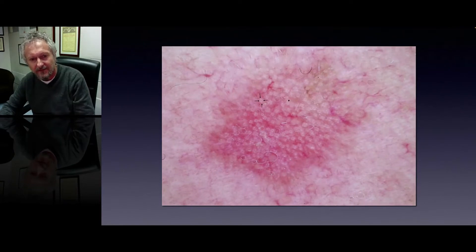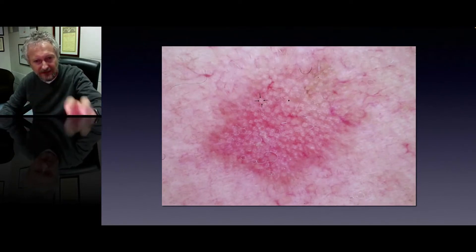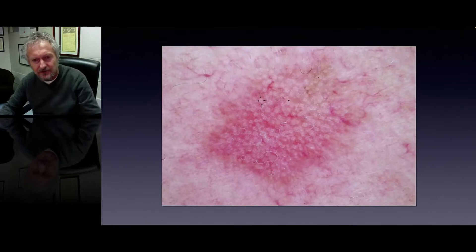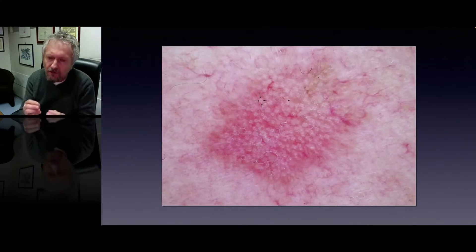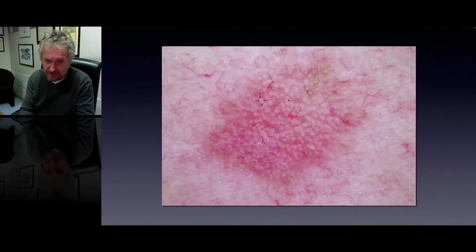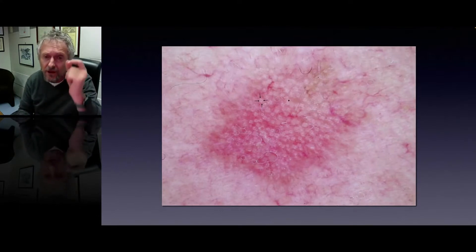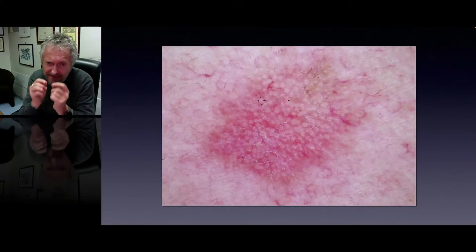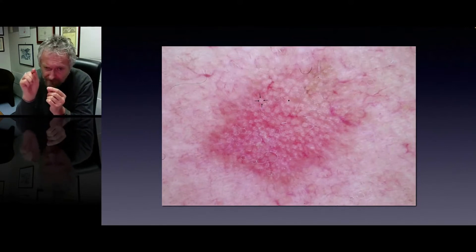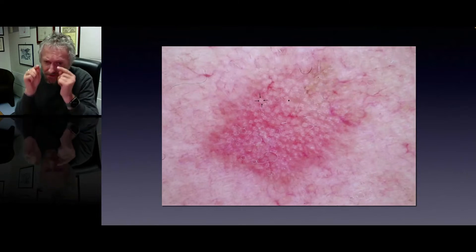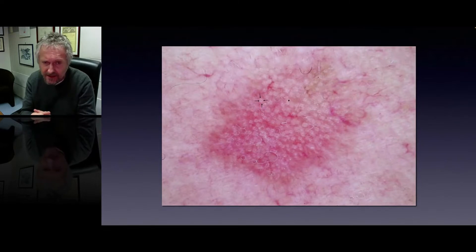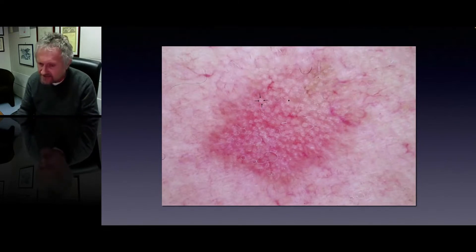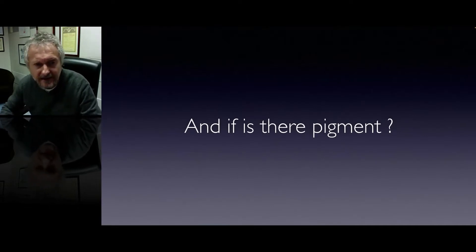Here is another example of this strawberry pattern with the red pseudo-network. You can also see an additional feature very nicely demonstrated through the use of polarized light dermatoscopes: the presence of rosettes. A rosette is the presence of four white dots within the follicle. This is very specific for actinic keratosis.